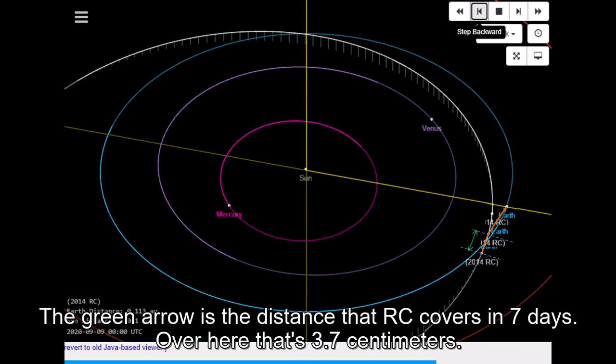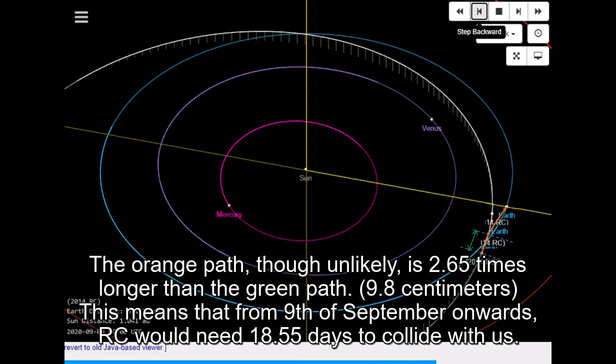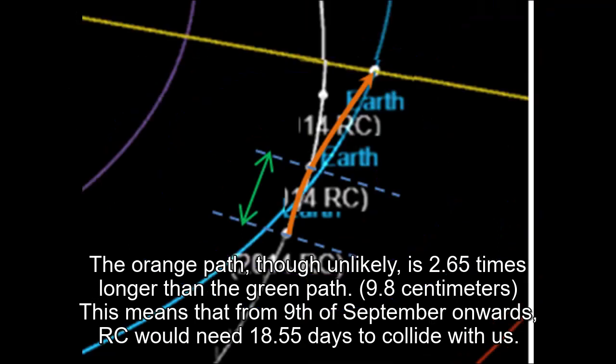The green arrow is the distance that RC covers in 7 days. Over here that's 3.7 centimeters. The orange path, though unlikely, is 2.65 times longer than the green path, 9.8 centimeters. This means that from 9th of September onwards, RC would need 18.55 days to collide with us.